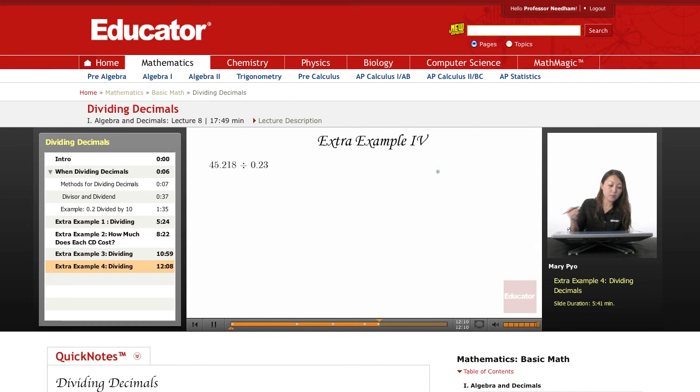Okay, my next example, I'm going to do 45.218 divided by 0.23, or I can read this as 45 and 218 thousandths divided by 0.23, or 23 hundredths.